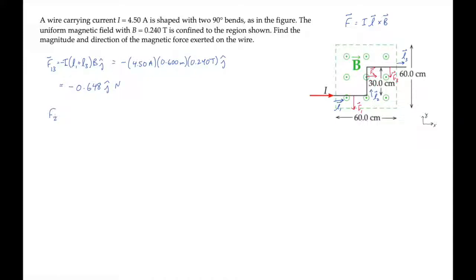The force on the middle segment F2 is equal to I times L2 times B in the x direction. We can notice that L2 is half the sum of L1 and 3. So that force has half the magnitude and it's in the x direction.